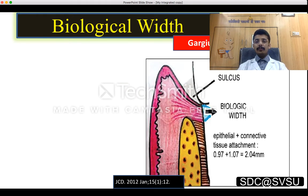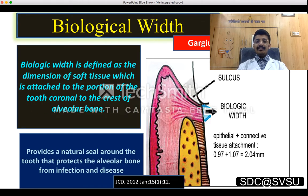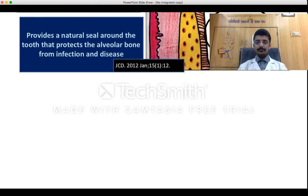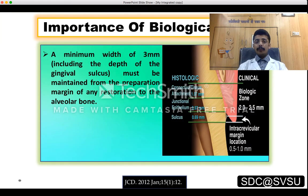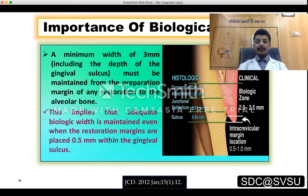The concept of biological width was given by Gargulo et al. in the year 1961, which states that it is the dimension of soft tissues attached to the portion of the tooth coronal to the crest of the alveolar bone. It provides a natural seal around the tooth protecting the alveolar bone from infection and disease. Clinically, a minimum width of 3 mm must be maintained from the preparation margin of any restoration to the alveolar bone, meaning adequate biological width is maintained even when restoration margins are placed 0.5 mm within the gingival sulcus.